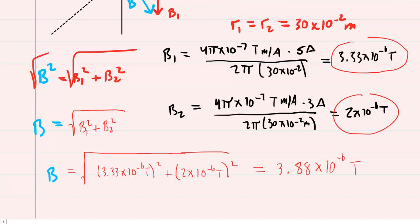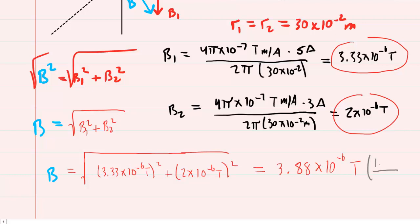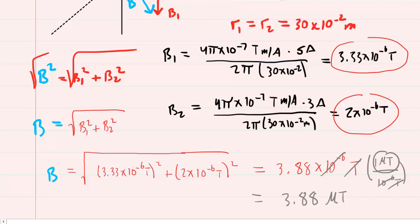That's the magnitude of the magnetic field. If you need it in microtesla, recall that 1 microtesla is equivalent to 10 to the minus 6 tesla. Setting up that conversion cancels the 10 to the minus 6 tesla, leaving us with 3.88 microtesla.